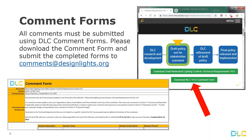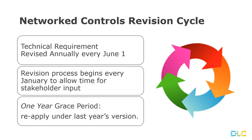As many of you know, we update our technical requirements for network lighting controls every year. The annual update process finalizes in June, when all qualified products will need to requalify under the new version 4.0 requirements. This year we expect most of the products currently on the list to meet the new requirements, and Levin will be sharing some information about that shortly. If that's not feasible, a product does have a one-year grace period to remain on the network lighting controls qualified products list under the prior year's requirements.